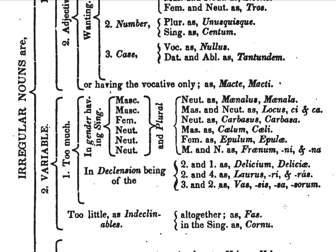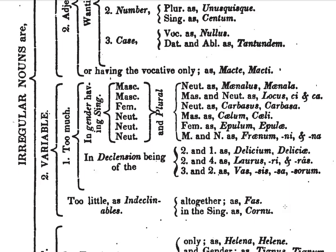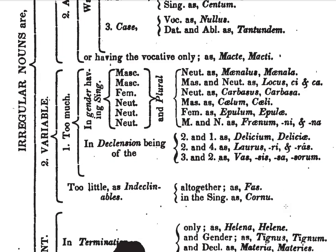Then we have variable — those with too much variation in gender, having singular masculine, feminine, and neuter, and plural forms, as in maenalus and maenala; locus, loci, and loca; carbasus, carbassa; caelum, caeli; epilum, epilai; fraenum, fraeni, fraena. And also those having too many declensions, as in delicium, deliciae; laurus, lauri, and lauras; or vas, vasis, vasa, vasorum. Or those that vary too little, as in indeclinables — completely, as in fas; or in the singular, as in cornu.